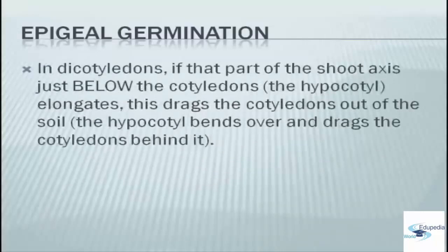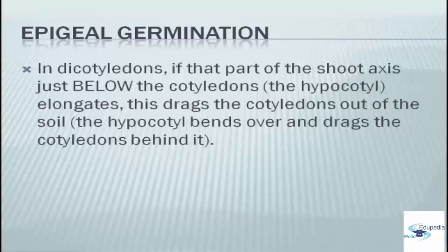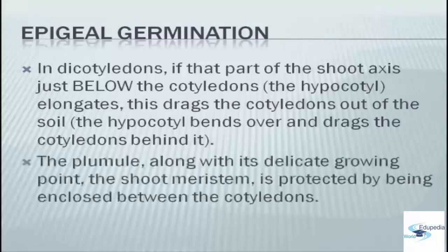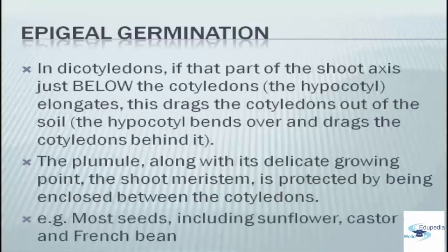In epigeal germination, if the part of the short axis is just below the cotyledons, the hypocotyl elongates, which drags the cotyledons out of the soil. The hypocotyl bends over and drags the cotyledons behind it. The plumule, along with its delicate growing point, is protected by being enclosed between the cotyledons. Examples include most seeds such as sunflower, castor oil, and French bean.